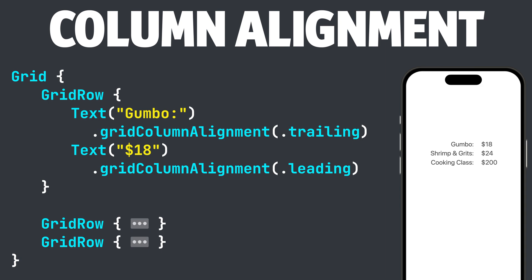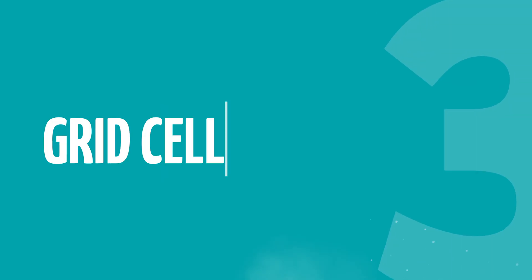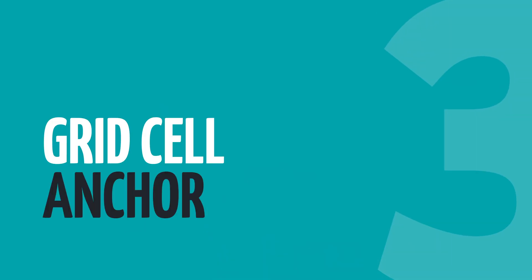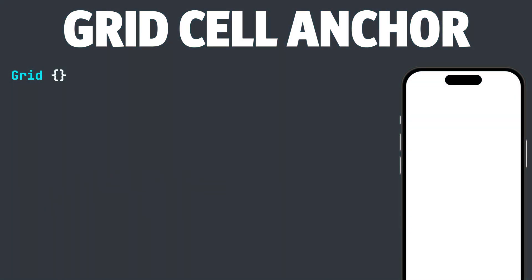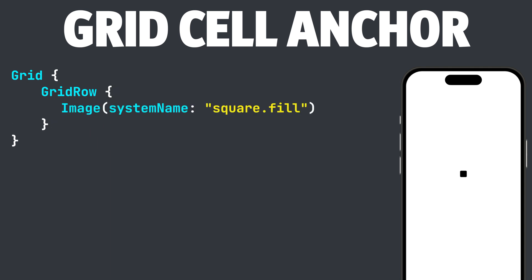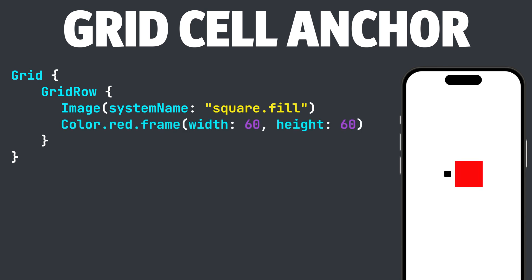Earlier, we configured cells with the .gridCellColumns modifier. We have one more cell modifier we can use, which is the .gridCellAnchor modifier. Let's set up a grid with a grid row inside it. Inside of the grid row, we're going to add an image of system name square.fill, and then add a Color.red with a frame modifier that has a height of 60 and a width of 60.